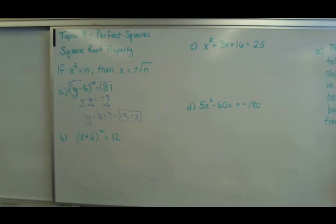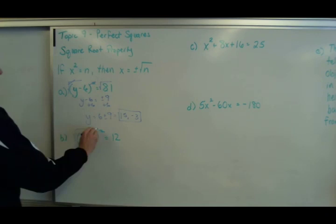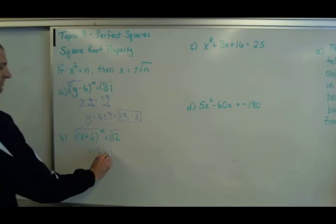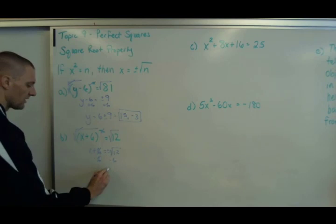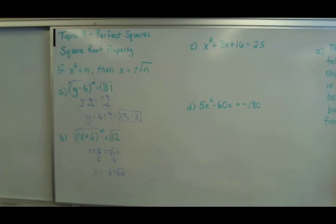Now for example b, I'm going to follow the same process. I've got (x + 6)² = 12. So again, cancel out that square, so I'm going to take that square root. Those two things cancel, you're left with x + 6 equals the square root of 12. Don't forget your plus and minus. Then you can subtract 6, and those two things cancel, and you get x = -6 ± √12.